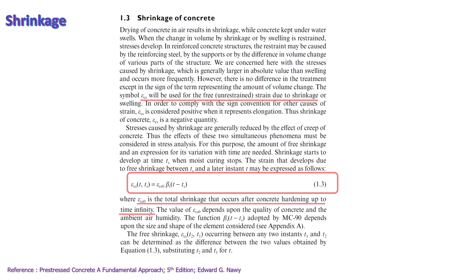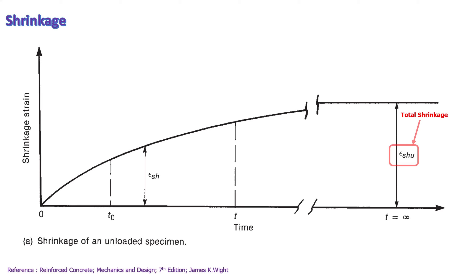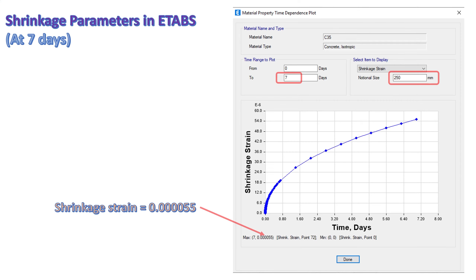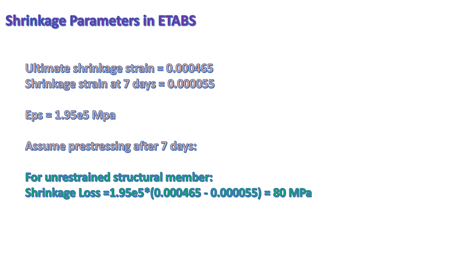The concrete shrinkage behavior without restraint could be expressed with this equation. This picture demonstrates the shrinkage behavior of unrestrained concrete over time. The total shrinkage is the maximum shrinkage for the unrestrained concrete. An example for shrinkage loss calculation for concrete strength of 35 MPa with 70% relative humidity and 250 mm notional size is shown here.